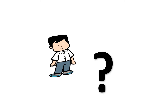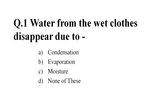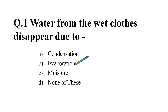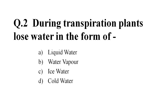Let us revise what we have learnt today by solving some questions. Question number 1: Water from wet clothes disappears due to — option A condensation, option B evaporation, option C moisture, option D none of these. The correct answer is option B, evaporation.